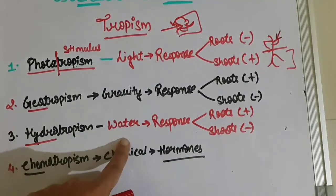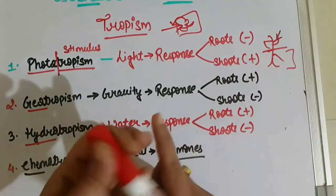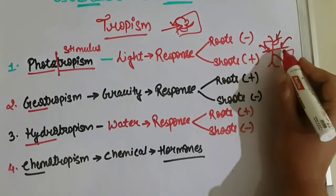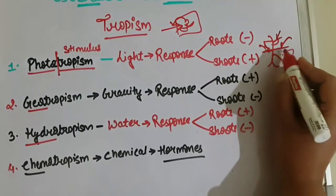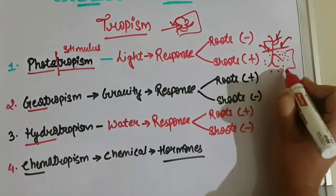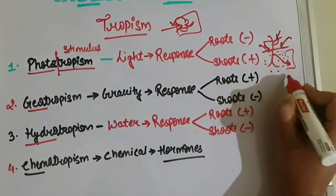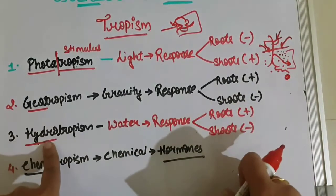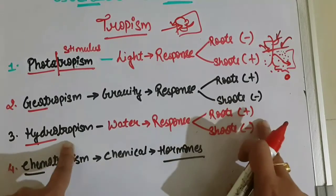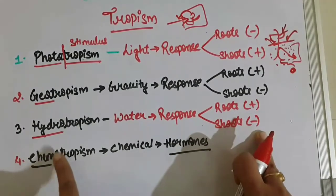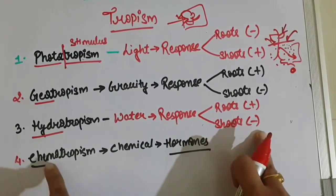The third type is hydrotropism, where 'hydro' means water — so this is how a plant responds to water. Water is given to the soil and it penetrates deep down through the porous nature of the soil toward the roots. Wherever the plant roots find water, they tend to grow in that direction. Therefore, in hydrotropism, the roots show positive hydrotropism whereas the shoot shows negative hydrotropism.